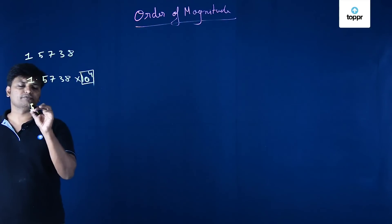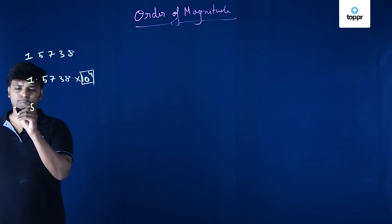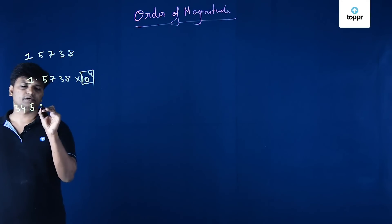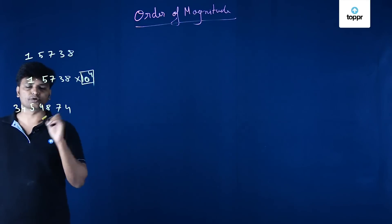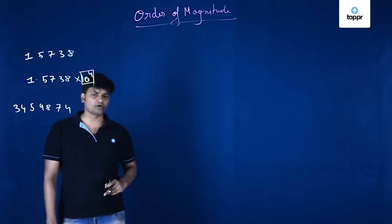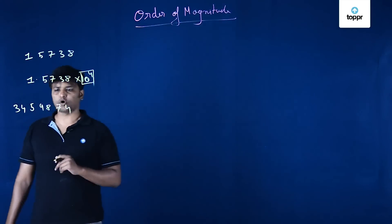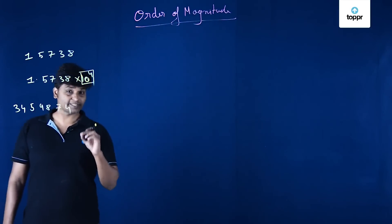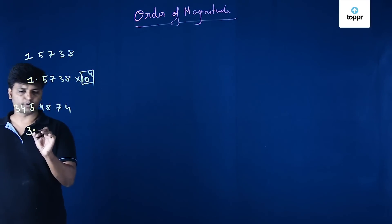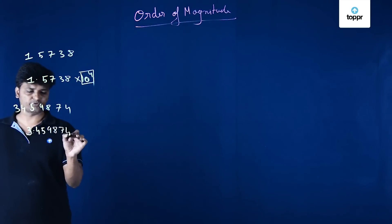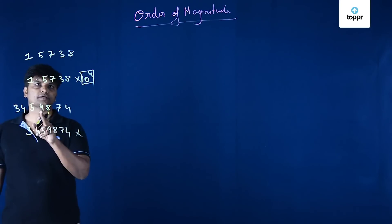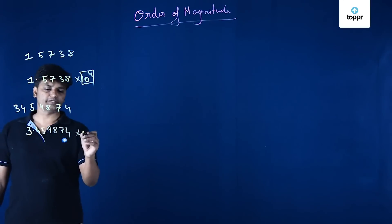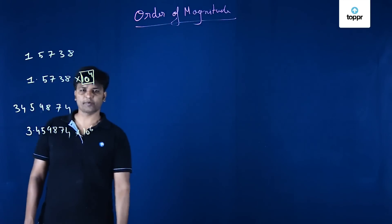Let me give you another number: 3,459,874. Calculate the order of magnitude. To do this, I convert it so there is only one digit before the decimal point: 3.459874 × 10^6. So the order of magnitude of this number is 10^6.